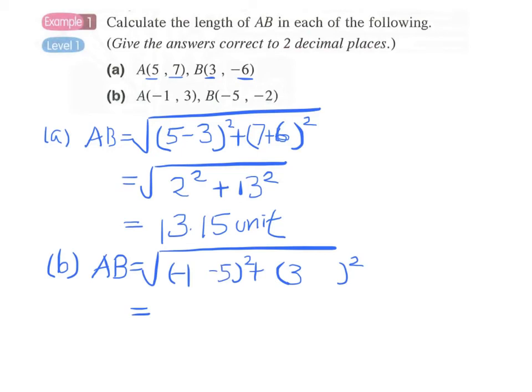We can do it mentally in this way: -1 subtract -5, we have -1 plus 5. And 3 minus -2, we have plus 2 here. Since the coordinates of point B are all negative numbers, -5 and -2, we have the plus sign here.